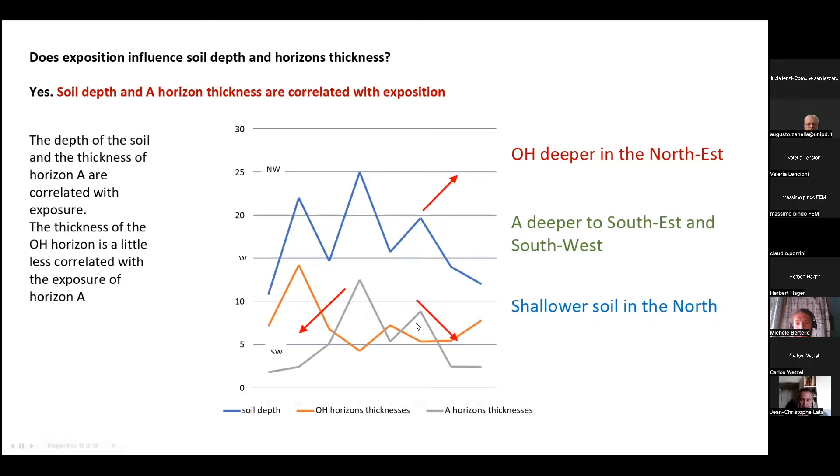It's possible to see also deeper soil in east and west expositions. This is probably because in south exposition it's too dry during the summer. This is an idea, a possible explanation for this. So it seems that the better situation are east and west expositions for soil.